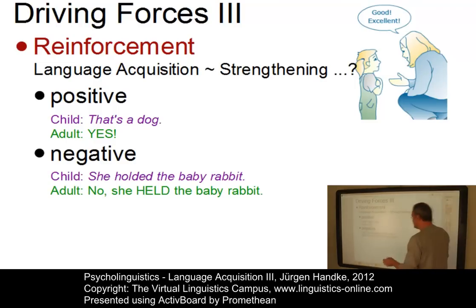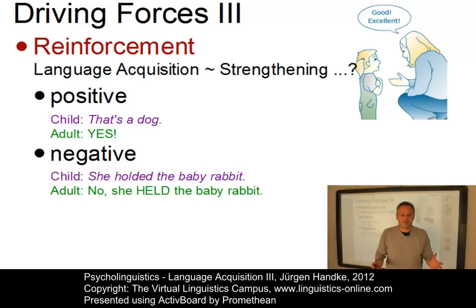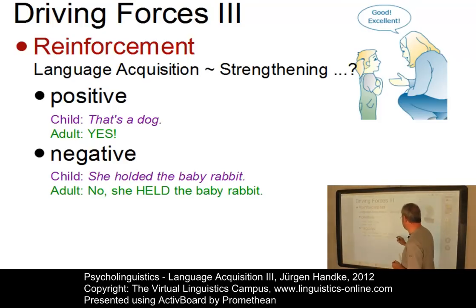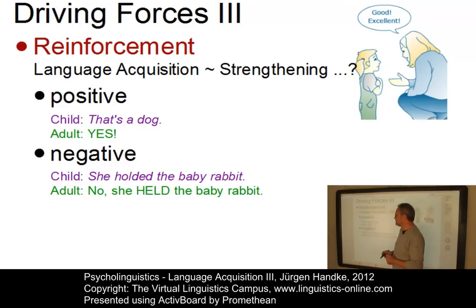The opposite is negative reinforcement. As soon as children produce something not in line with adult speech, such as 'she hold the baby rabbit,' an adult could respond with 'she held the baby rabbit.' This correction would be called negative reinforcement.